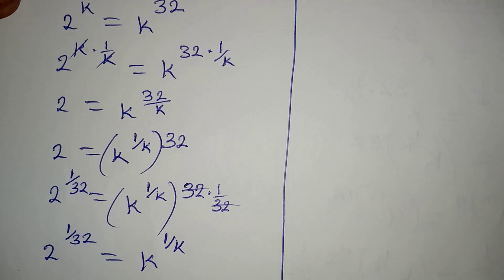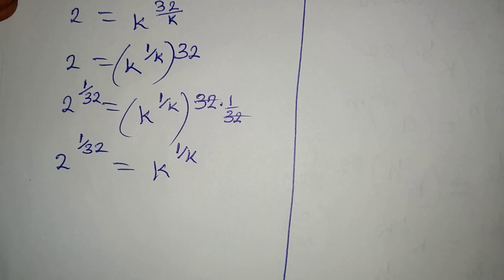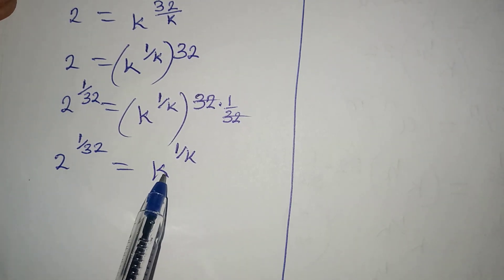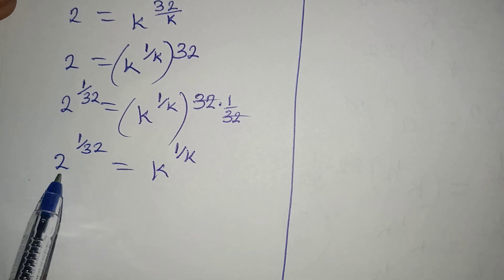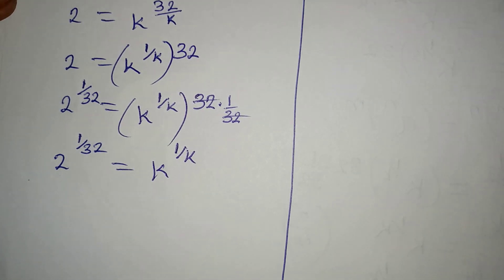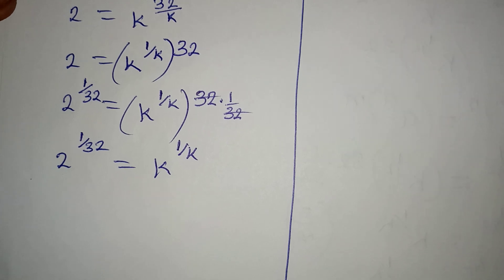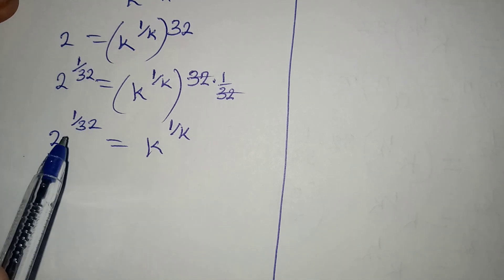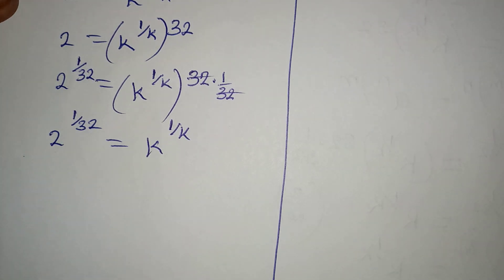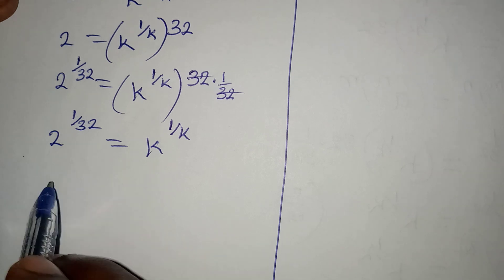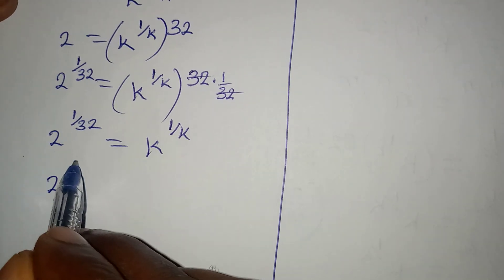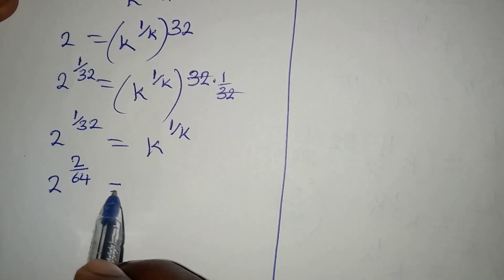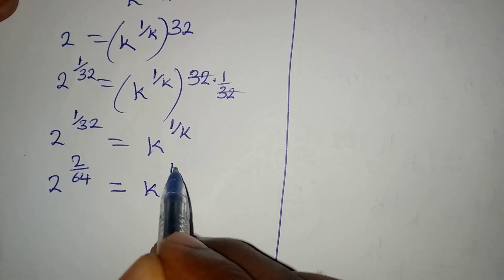Now at this point we cannot directly get the value of k, because if you compare the bases you get k equals 2, and if you compare the powers you get k equals 32 — contradictory results. So we have to take a step to make it make sense. What I will do is get an equivalent fraction to 1 over 32, which is 2 over 64. This is still equal to k to the power of 1 over k.